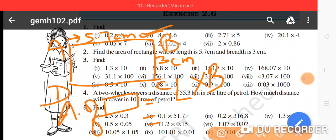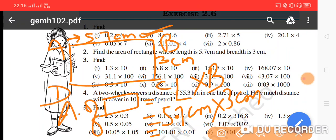So length is 5.7 centimeter and breadth is 3 centimeter. Now we will multiply these two: 5.7 multiply by 3. What will you get? 17.1. And you can see there is a decimal before 7, one number before decimal, that means one number before decimal.